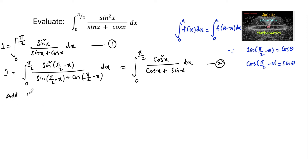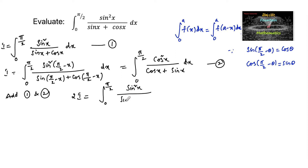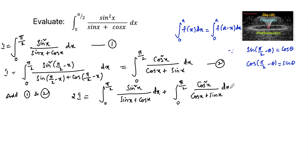Now adding equations 1 and 2: I + I, that is 2I, equals ∫₀^(π/2) sin²x/(sinx + cosx) dx plus ∫₀^(π/2) cos²x/(cosx + sinx) dx. Here both integrals have the same denominator.